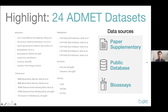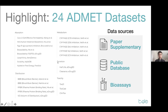I want to highlight some of the datasets covered in the first release of TDC. The first is ADMET. ADMET is very important for small molecule drug discovery — it measures how a drug can be delivered to a human body at the site of action safely and efficaciously. There are lots of ADMET web servers, but they do prediction instead of open-sourcing the data. In TDC, we collected the raw original datasets from various papers, supplementaries, public databases, and bioassays. In the first release, we have 24 ADMET datasets covering all five major categories: absorption, distribution, metabolism, excretion, and toxicity.